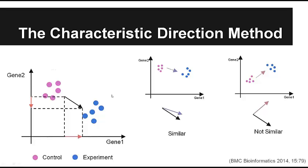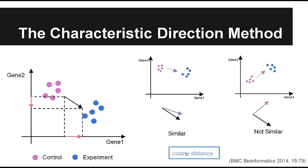We can calculate the direction for other experiments — for example, the direction for experiment two and experiment three. We can then compare the similarity between experiments using these directions. If two directions are aligned together, the experiments are more similar. If the angle between the two directions is large, they are not similar. This similarity can be characterized by the cosine distance, which is basically a measure of the angle between two directions.